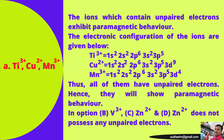In option B, Zn2+ does not possess any unpaired electrons, so that set would not be fully paramagnetic. Hence option A — Ti3+, Cu2+, and Mn3+ — is the correct answer.